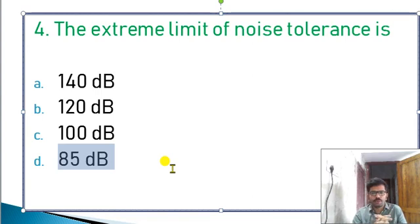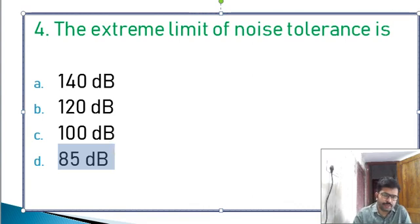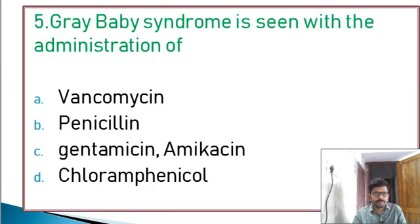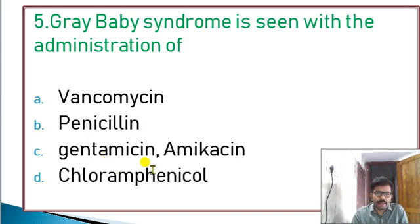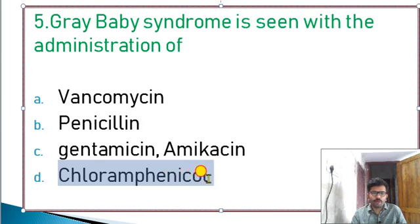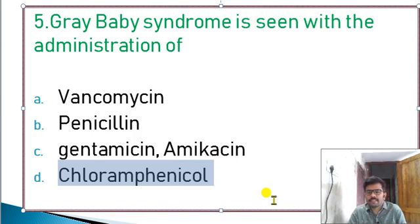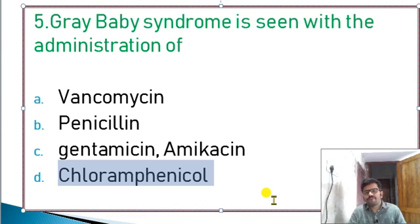With the administration of which drug is grey baby syndrome seen — options: vancomycin, penicillin, gentamicin, amikacin, chloramphenicol. Grey baby syndrome is seen with chloramphenicol administration, especially in premature babies, because premature babies cannot metabolize chloramphenicol. Chloramphenicol is the drug of choice for typhoid fever.